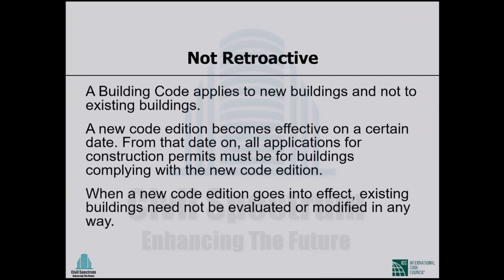Building codes are not retroactive. A code is updated, a new edition comes out, and that edition applies to new buildings — not to existing buildings. A new code edition becomes effective on a certain date; from that date on, all applications for construction permits must comply with the new edition. When a new code edition goes into effect, existing buildings need not be evaluated or modified. We couldn't live that way — it is impractical.